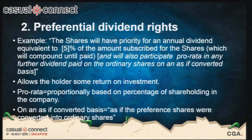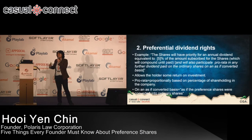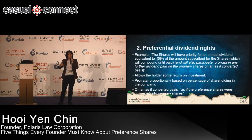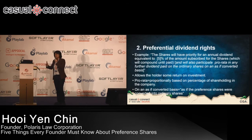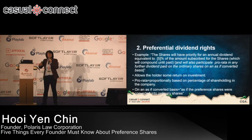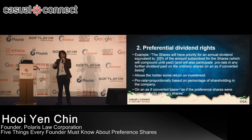Point two: preferential dividend rights. An example clause you might see in a term sheet says: 'The shares will have a priority to an annual dividend equivalent to 5% of the amount subscribed for the shares.' You can see here the similarities with loans — the investor is asking for a priority to an annual dividend, like an interest rate on the amount of money they've invested in your company.